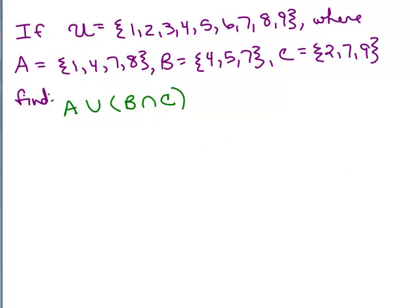Last one, A union B intersects C. Again, try this on your own by putting the video on pause and trying it and keep in mind you always want to do order of operations, what's in parentheses first. Okay, I'm going to go ahead and write down what A actually is. One, four, seven, and eight.